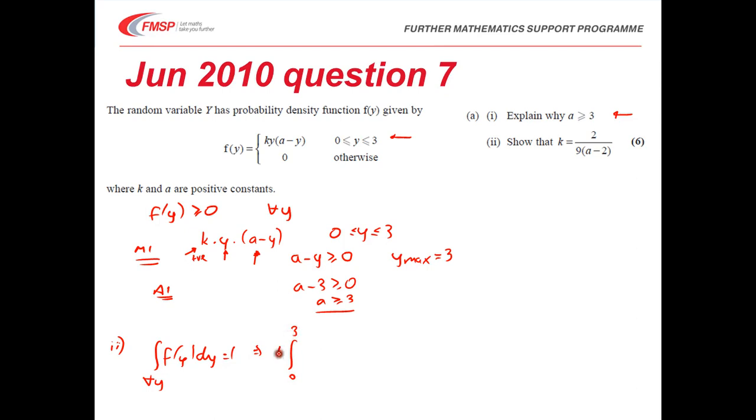k can come out of the integral and I'm left with integrating ay minus y squared dy. By doing that integration, I'm going to get k times ay squared over 2 minus y cubed on 3, between 0 and 3, which evaluates to k lots of 9a over 2 minus 27 over 3, which is 18 over 2. You'll see why I've done it over 2 in a minute.